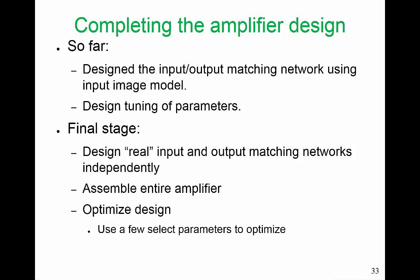For just the input network on its own, we will select a few parameters to optimize. If we optimize with respect to five, that is doable. If we try and optimize with respect to ten, fifteen, or more, that really isn't possible — we just don't know how to optimize with so many parameters. After we've designed the input and output matching networks independently, we will assemble the entire amplifier, and then we will optimize the overall design, but we'll just pick a few selected parameters.